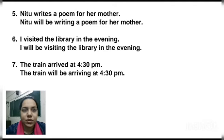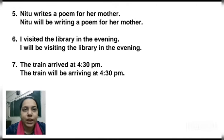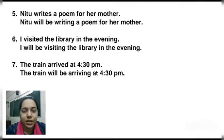Seven: 'The train arrived at 4:30 PM.' We change 'arrived' to 'will be arriving.' Answer: 'The train will be arriving at 4:30 PM,' meaning the train will come — it has not arrived yet.